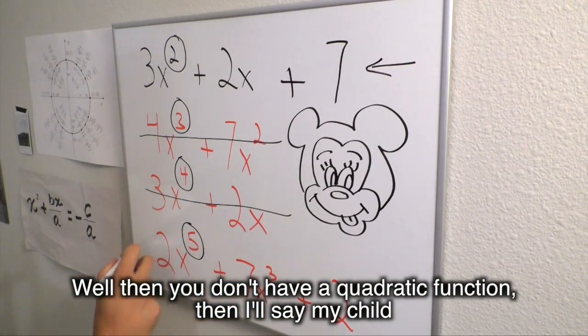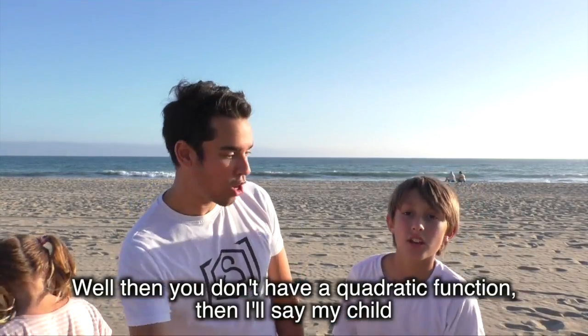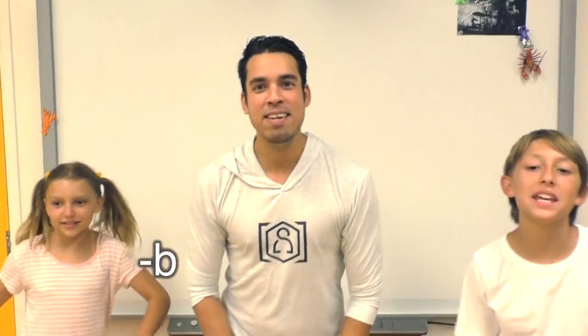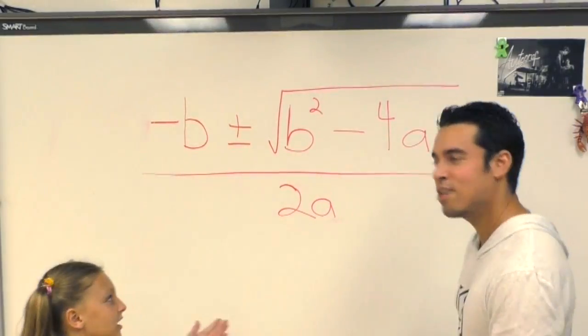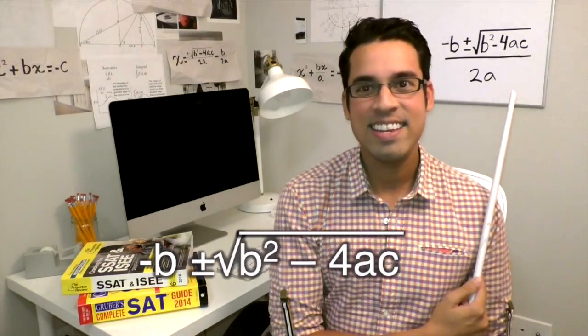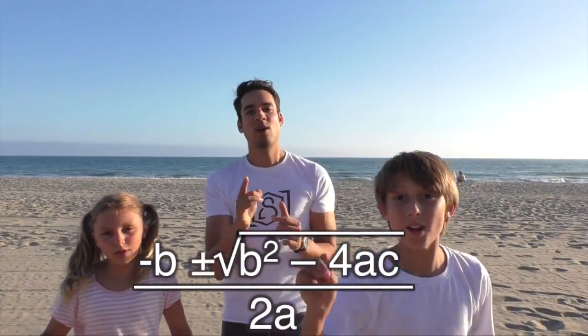And I say my child, negative b plus or minus the square root of b squared minus 4ac all over 2a. Negative b plus or minus the square root of b squared minus 4ac all over 2a.